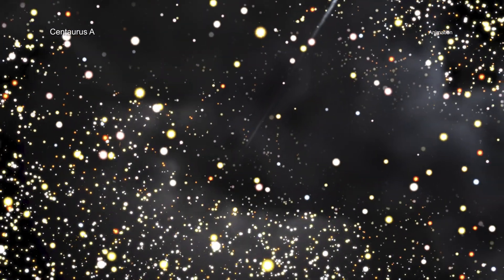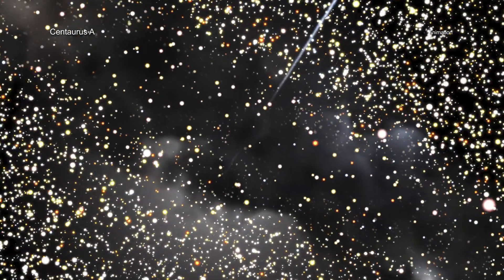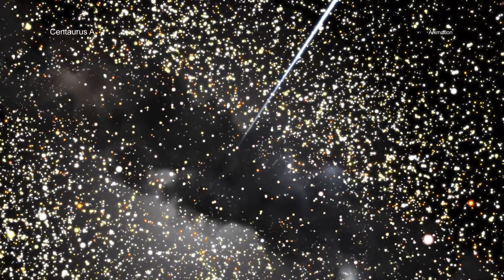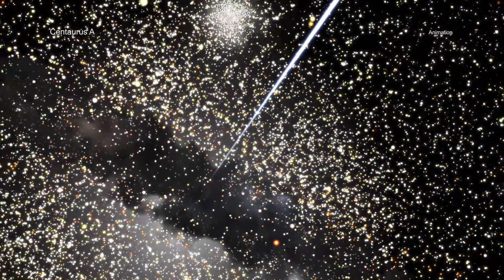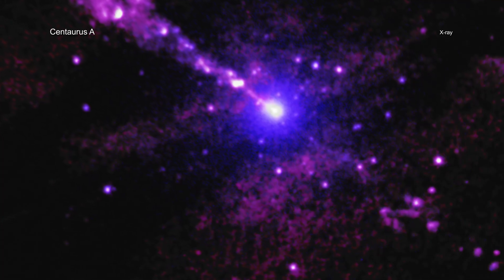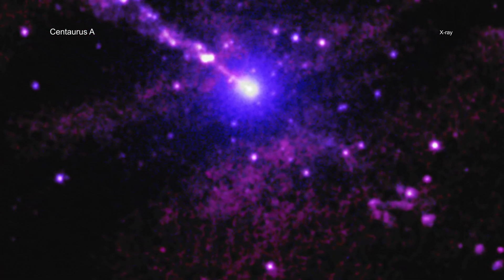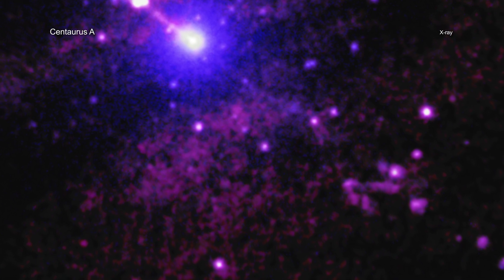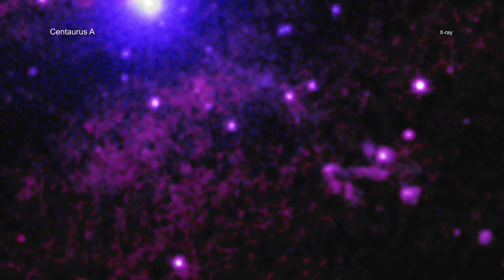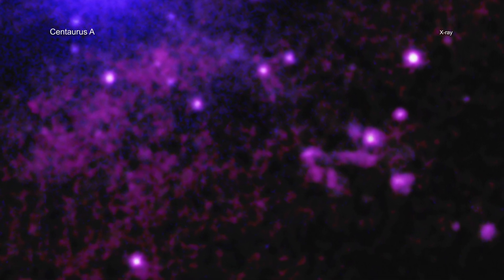In this latest study, researchers determined that the jet is, at least in certain spots, moving at close to the speed of light. Using the deepest X-ray image ever made of Centaurus A, they also found a patch of V-shaped emission connected to a bright source of X-rays, something that had not been seen before in this galaxy.